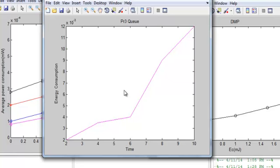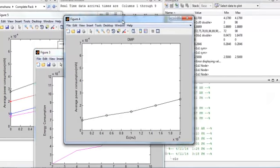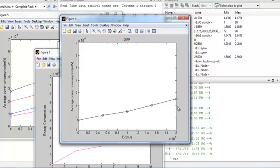So we have PR1, PR2, and PR3. Figures one, two, and three show the corresponding energy consumption of the queues. Figure four shows the overall dynamic multi-level priority queue energy consumption.